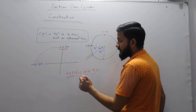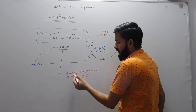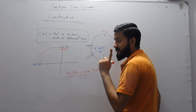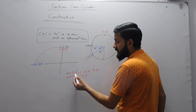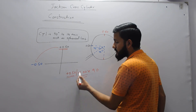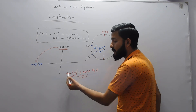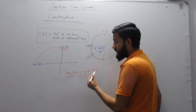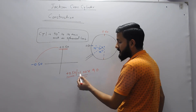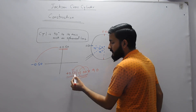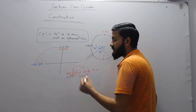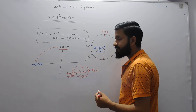Here you can see what we studied in the definition: the signs of the sphere and cylinder are opposite, and the power of the cylinder is two times that of the sphere.